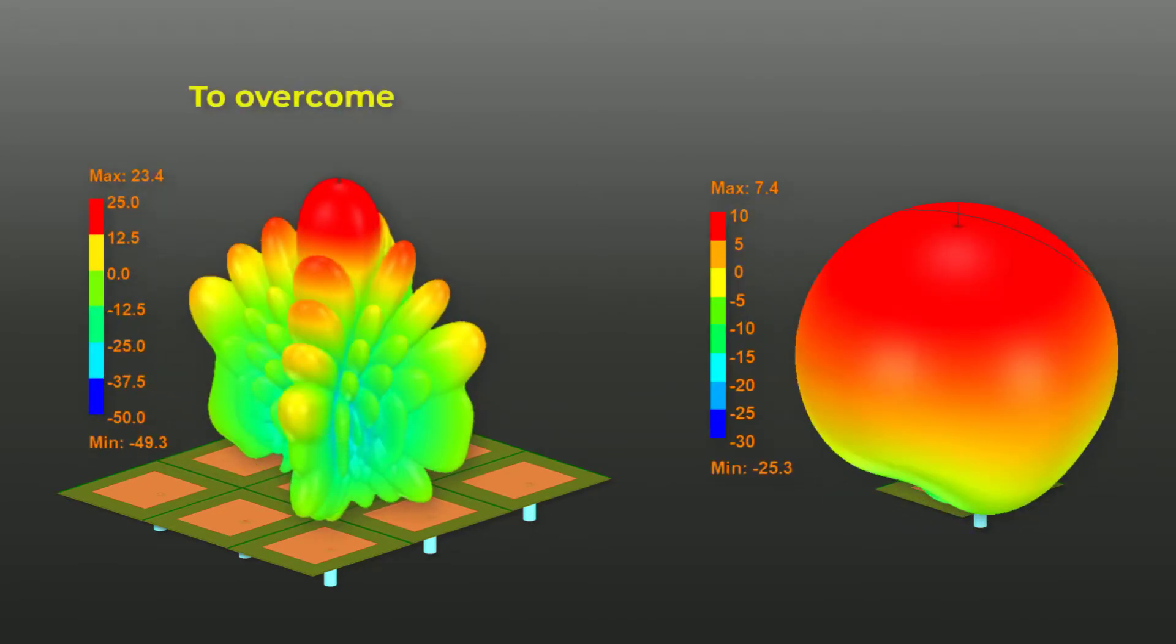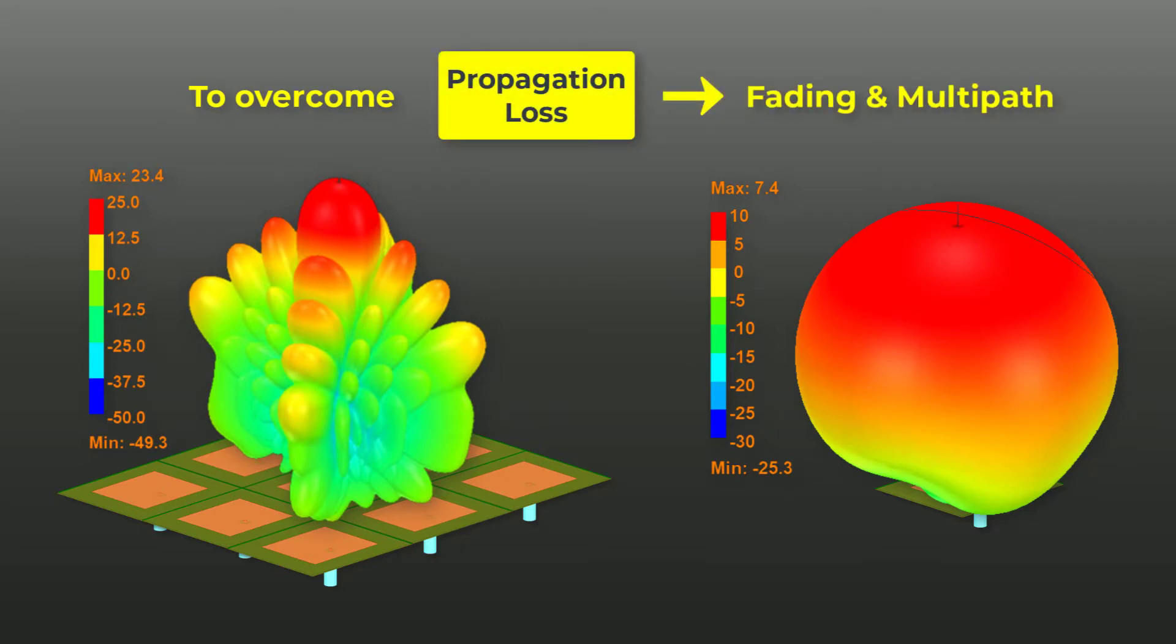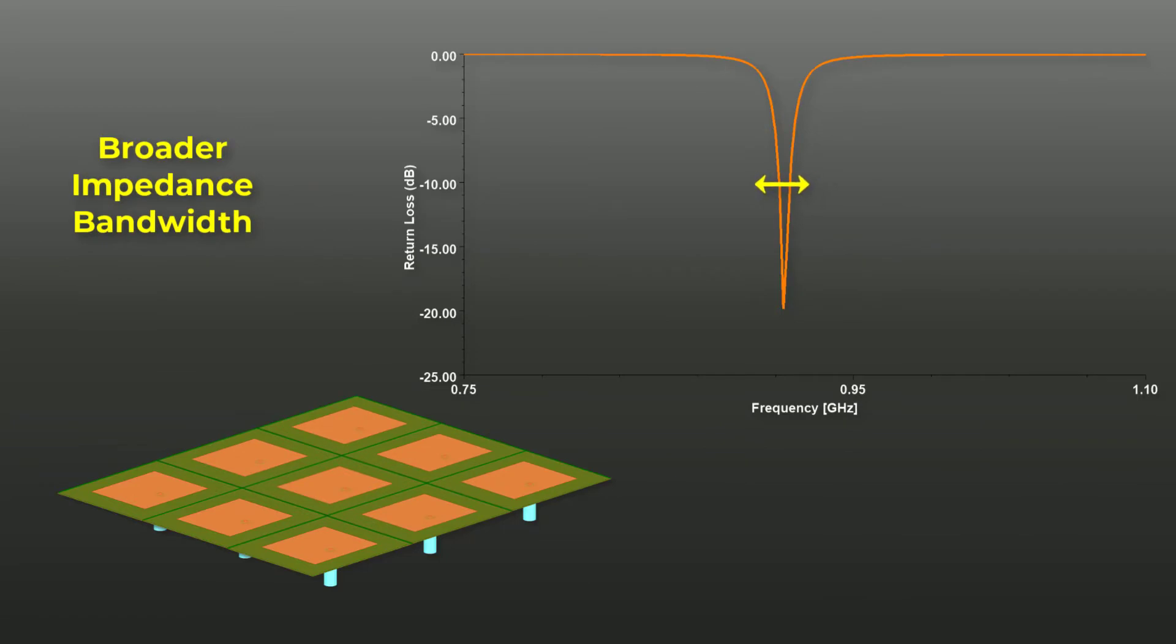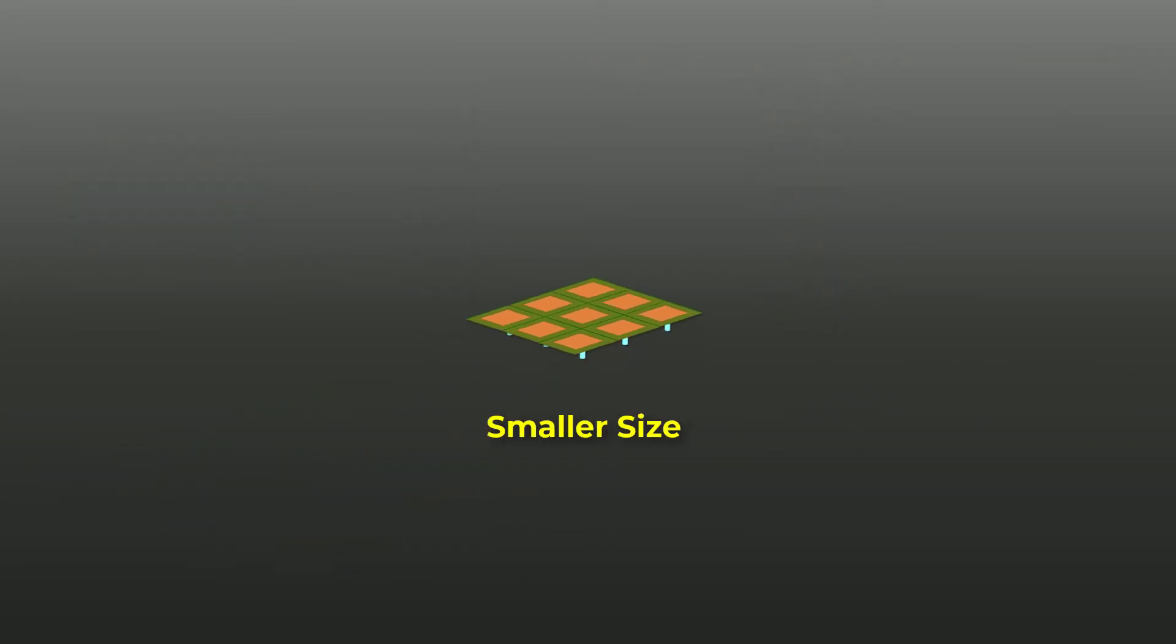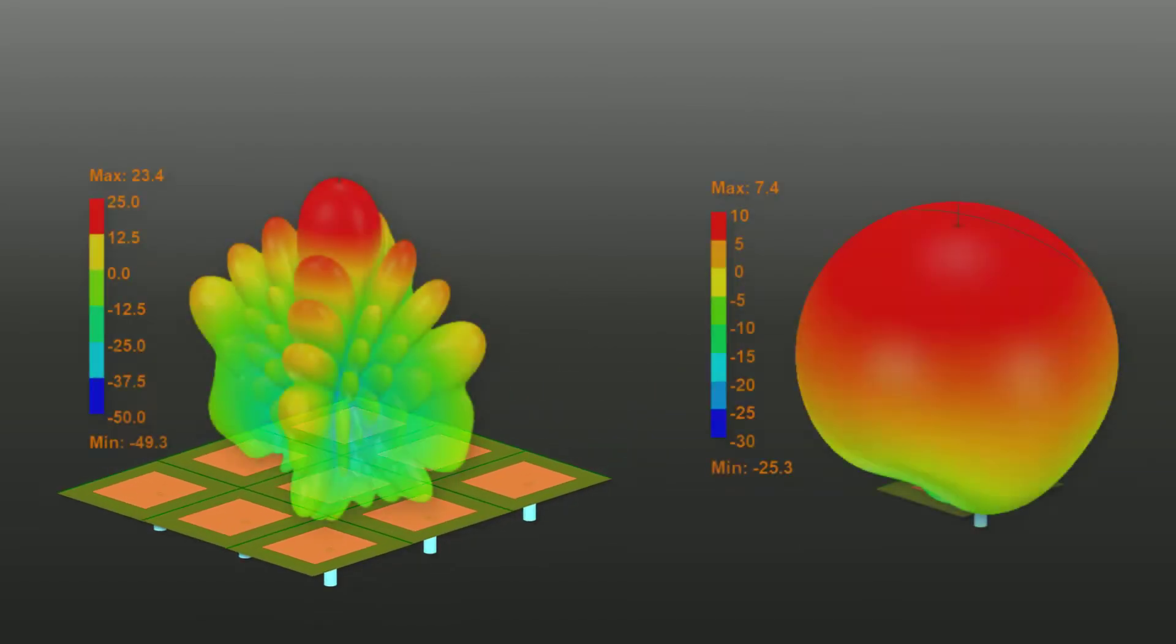Arrays help reduce propagation losses due to fading and multipath. They provide broader bandwidth, higher impedance bandwidth, and smaller size. The advantage of increasing gain when using an array comes at the cost of reducing beam width.